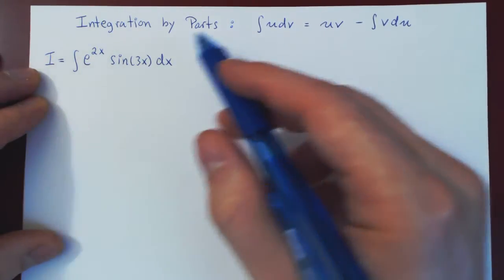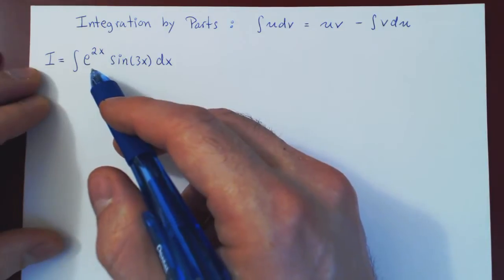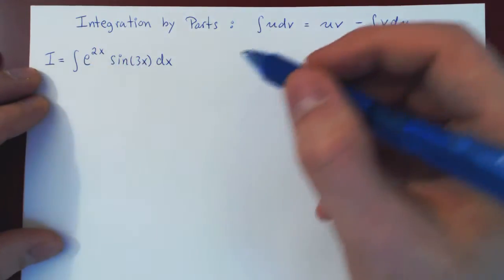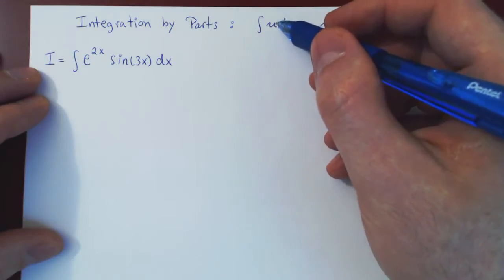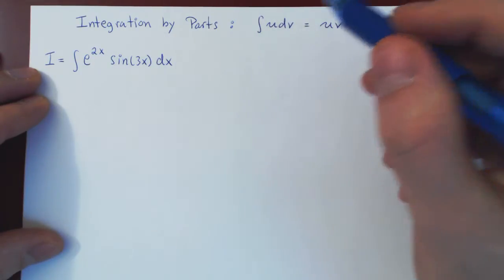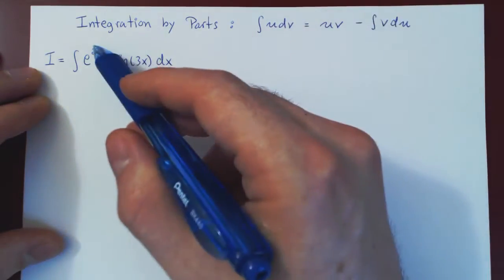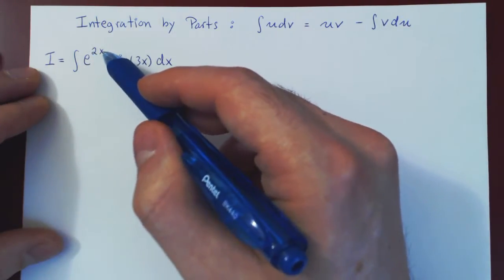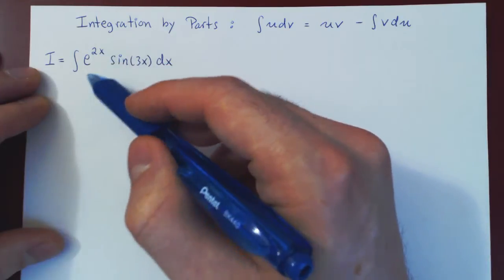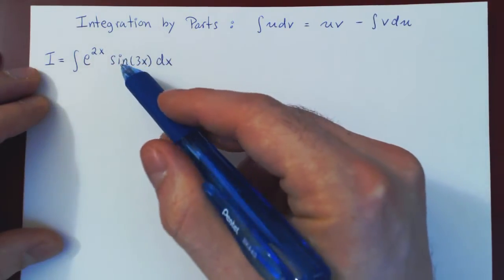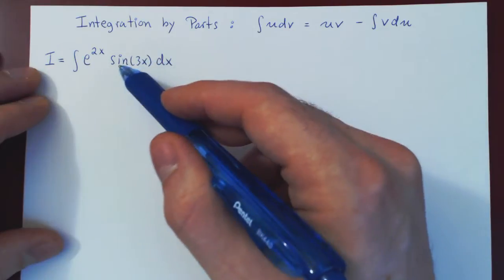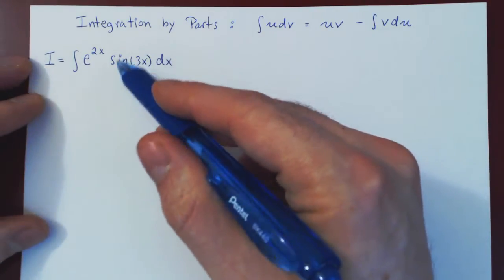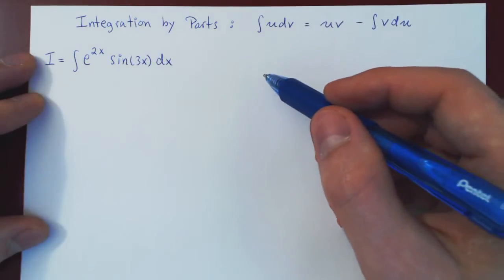As always, we have to choose our u, and here there are two functions: e to the 2x and sine of 3x. The rule of thumb in choosing u is so that the derivative gives the greatest simplification. If you differentiate e to the 2x, you get 2e to the 2x, which is basically the same function — no simplification. If you differentiate sine of 3x, you get cosine of 3x times 3, again essentially the same function — no simplification there either.